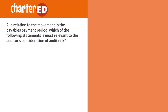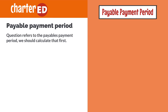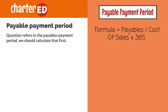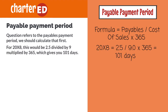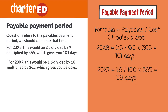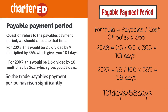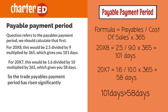Next question: in relation to the movement in the payables payment period, which statement is most relevant to the auditor's consideration of audit risk? Before looking at the answers, we should calculate the payables payment period: payables over cost of sales multiplied by 365. For 20X8: 2.5 divided by 9 multiplied by 365 gives 101 days. For 20X7: 1.6 divided by 10 multiplied by 365 gives 58 days. So the trade payables payment period has risen significantly.